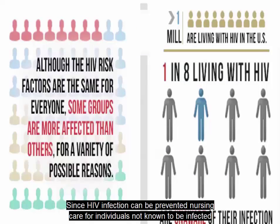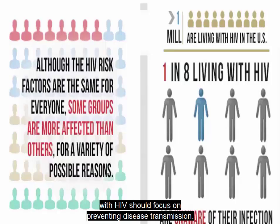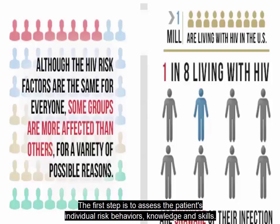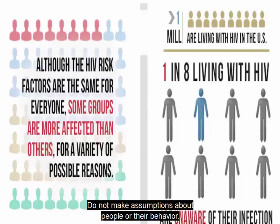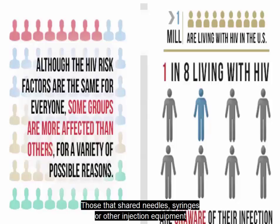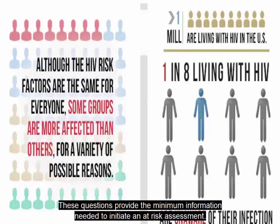Since HIV infection can be prevented, nursing care for individuals not known to be infected should focus on preventing disease transmission. The first step is to assess the patient's individual risk behaviors, knowledge, and skills — do not make assumptions about people or their behavior. At-risk patients include those who received blood transfusions or clotting factors before 1985, those who shared needles, syringes, or other injection equipment, and those who had a sexually transmitted infection. These questions provide the minimum information needed to initiate an at-risk assessment.